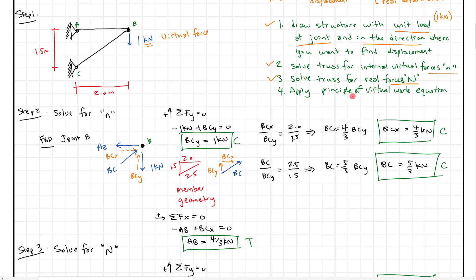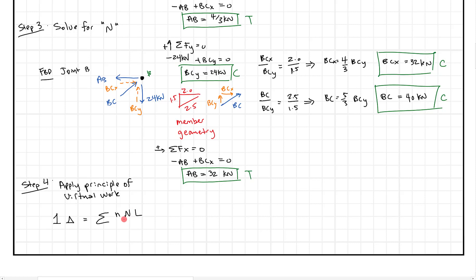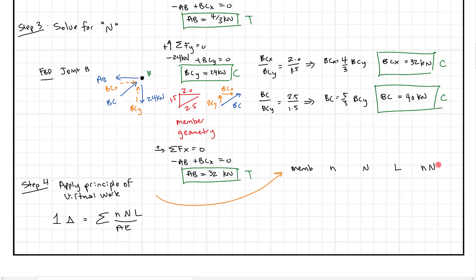Now we apply the principle of virtual work: one times Delta equals the sum of little n times big N times L, divided by AE. Since all members have the same A and E, we can pull that out of the summation. I like to set up a table with columns for member, little n (kN), big N (kN), L (m), and the product nNL.